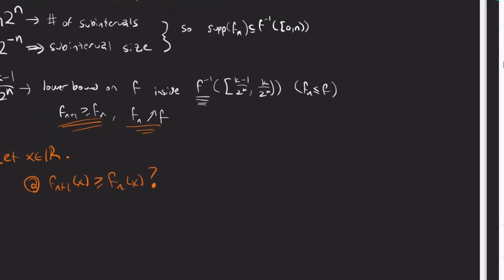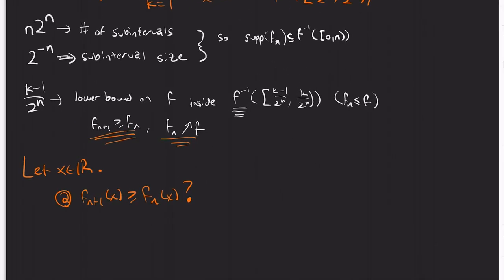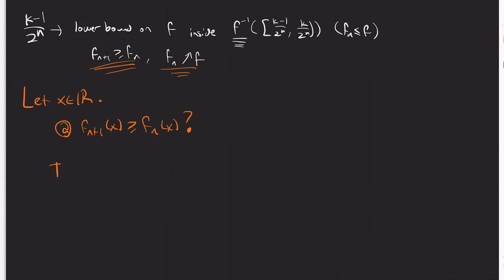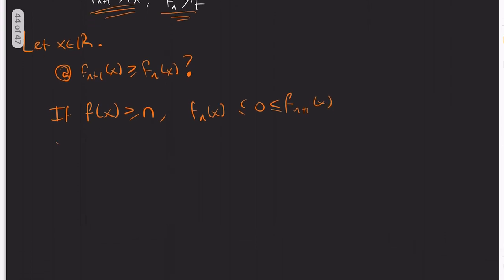So all I'm saying there is if F of X is greater than or equal to N, F_N of X is less than or equal to 0, which is less than or equal to F of X. So then we're done. Otherwise, so suppose F of X is less than N. So the information is at least encoded to some degree.